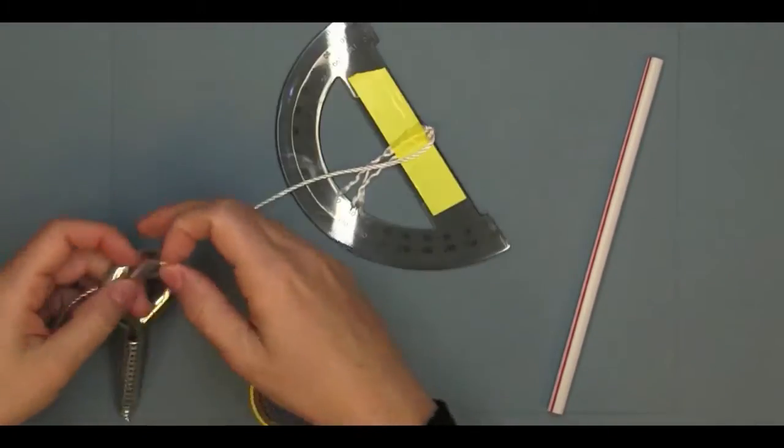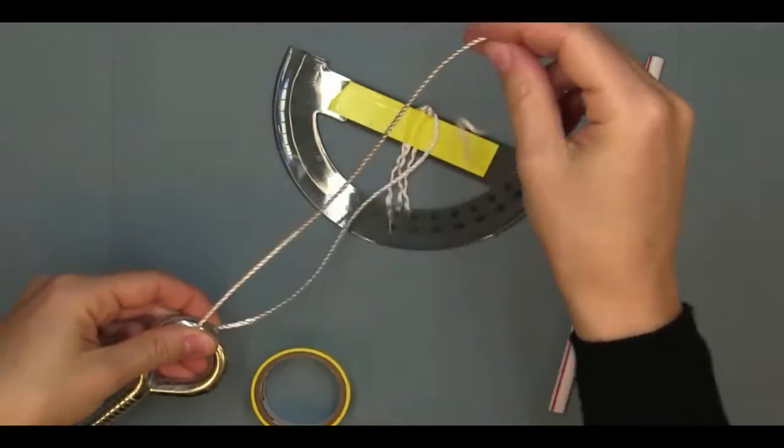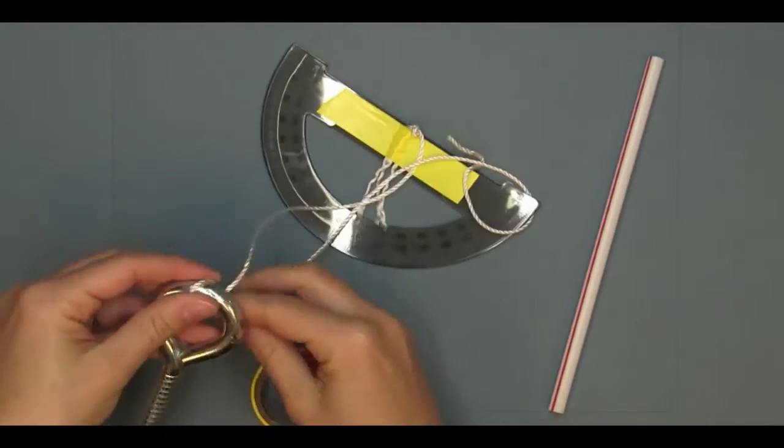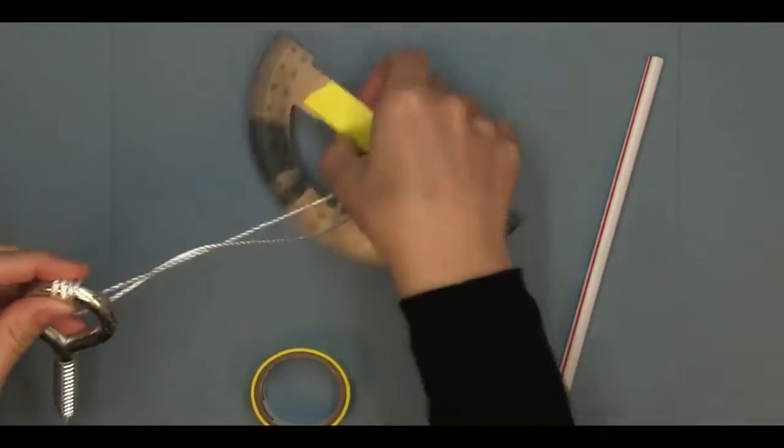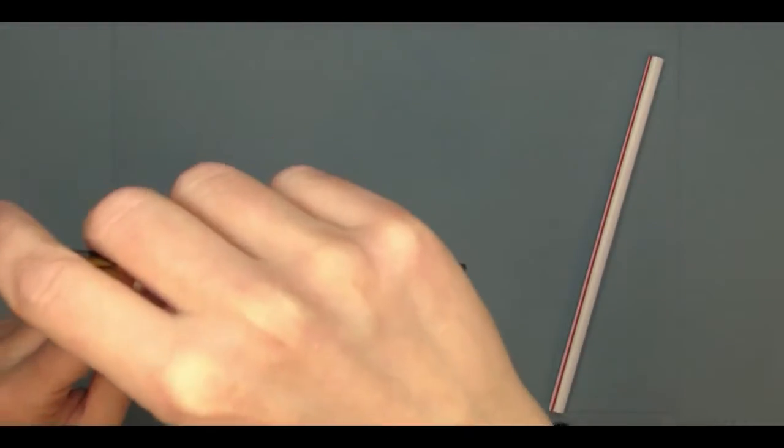Next, I tie my heavy object onto the other end of the string, making sure that there's enough slack in the string that the object hangs down, and you can use the string easily to measure angles.